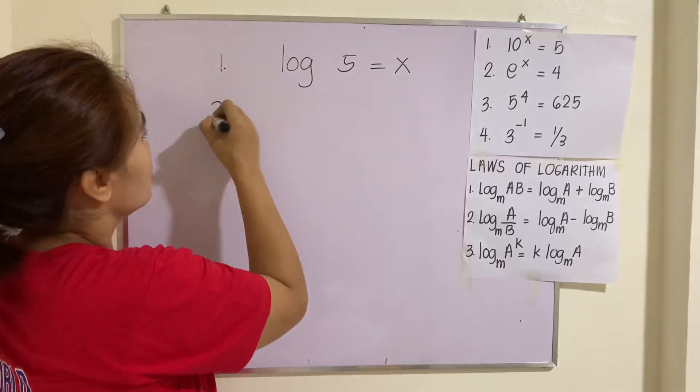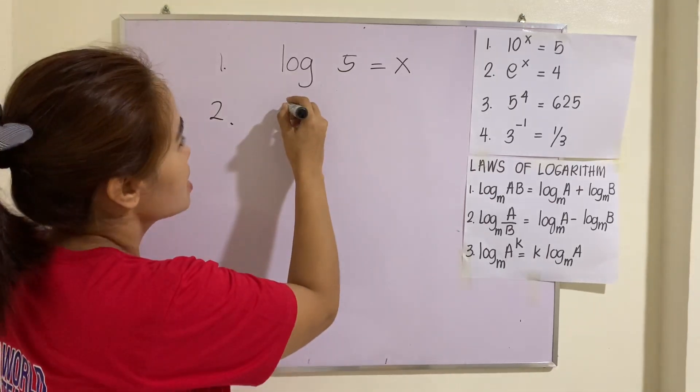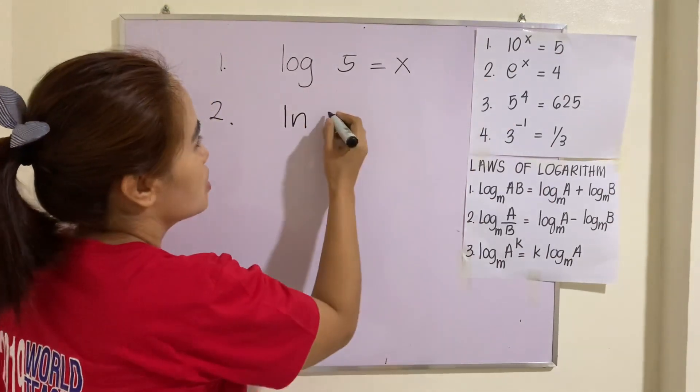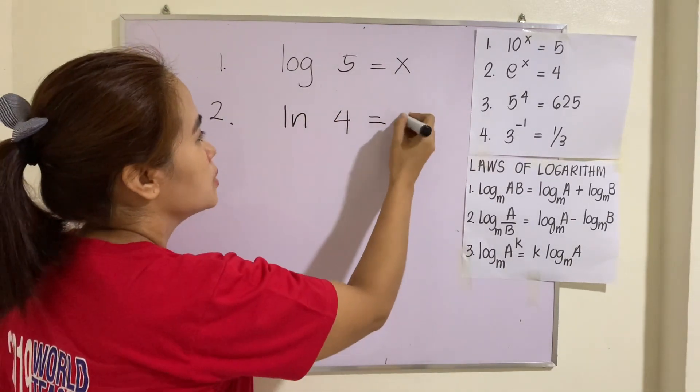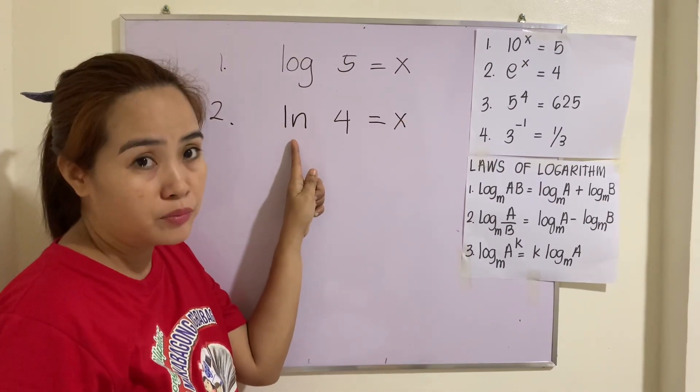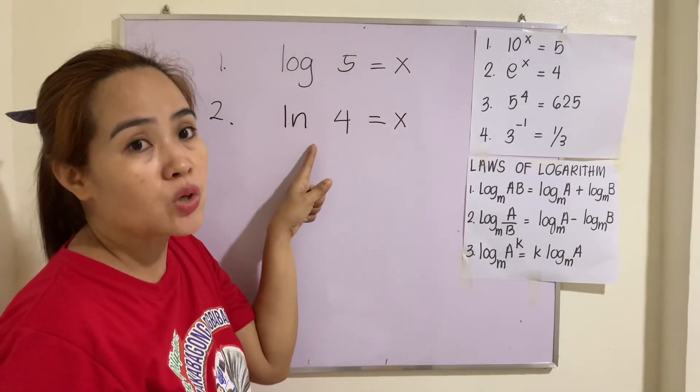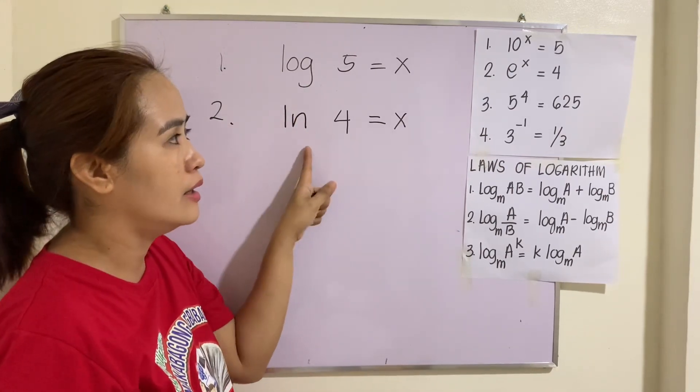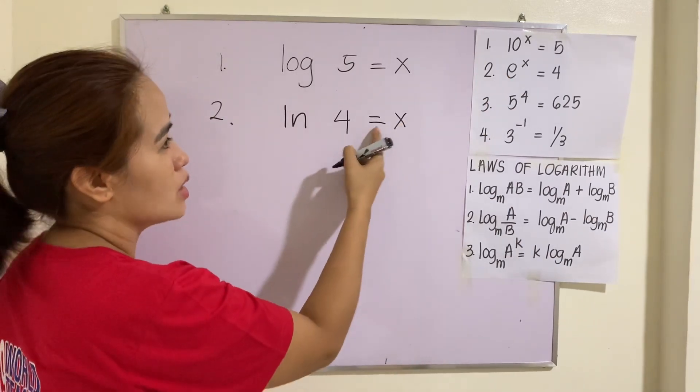What about number 2? In number 2, that will be, instead of log, I will be writing ln. Why? Because our base is e. So, that will be ln 4 = x. If you saw ln, this one is a natural logarithm. Again, the base here is e. No need to write e. It is understood already that once you saw ln, the base is e. That is ln 4 = x.